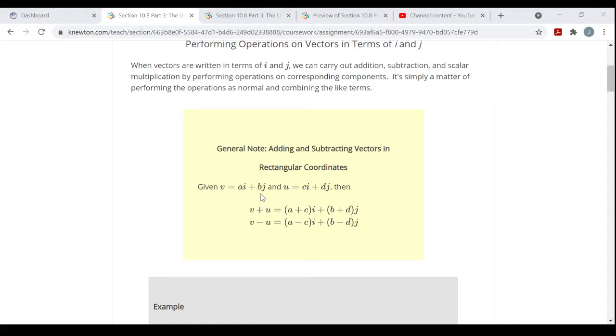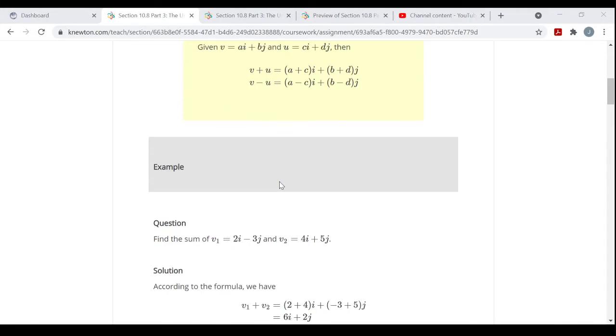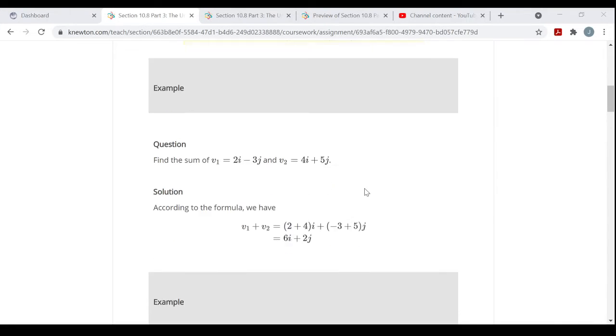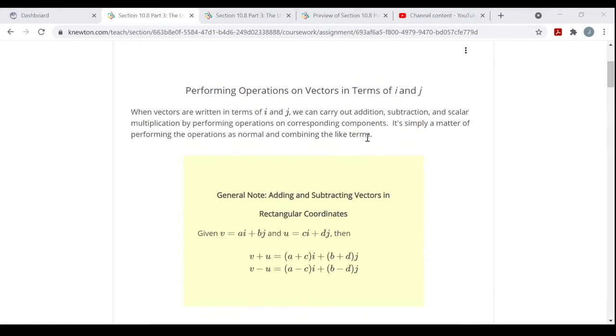The coefficients basically just tell you how far right or left and how far up or down you have to move. If u is c times i plus d times j, adding them you just add the i components, add the j components. Subtracting them, same thing. If multiplying by a scalar, just use the distributive property.